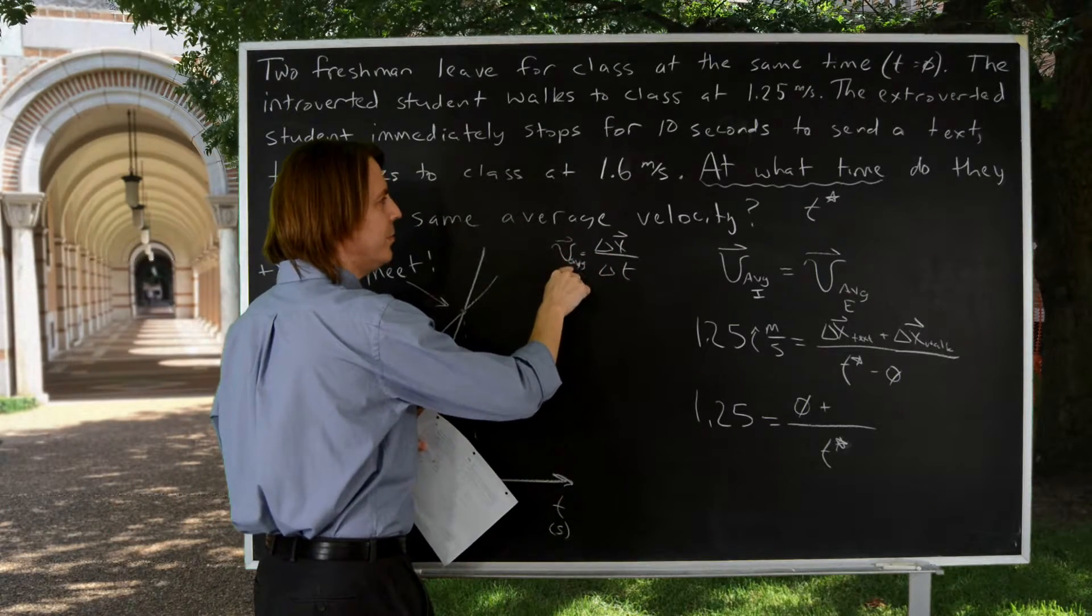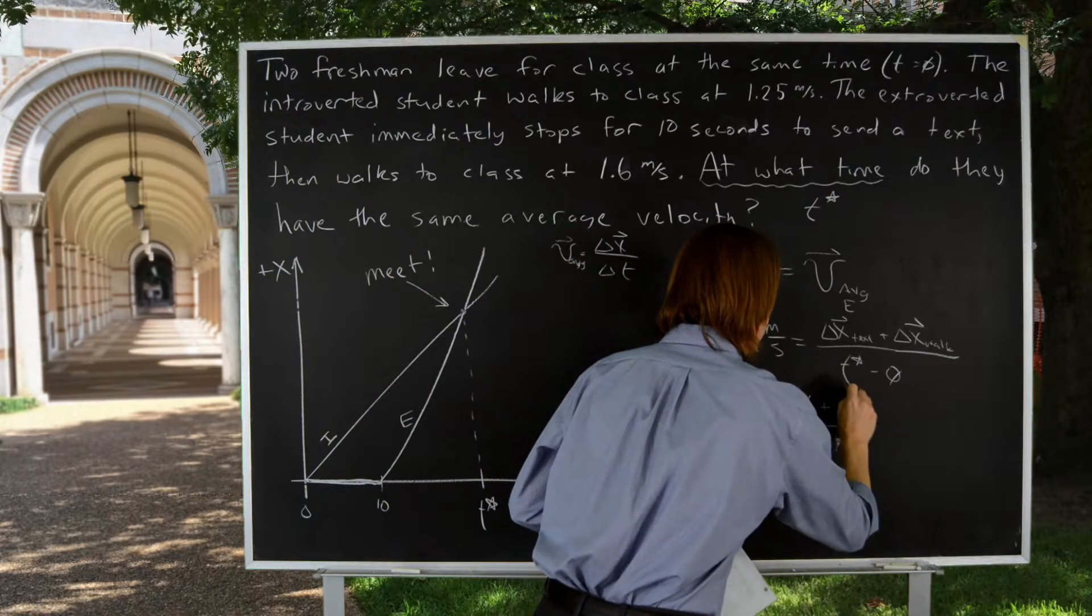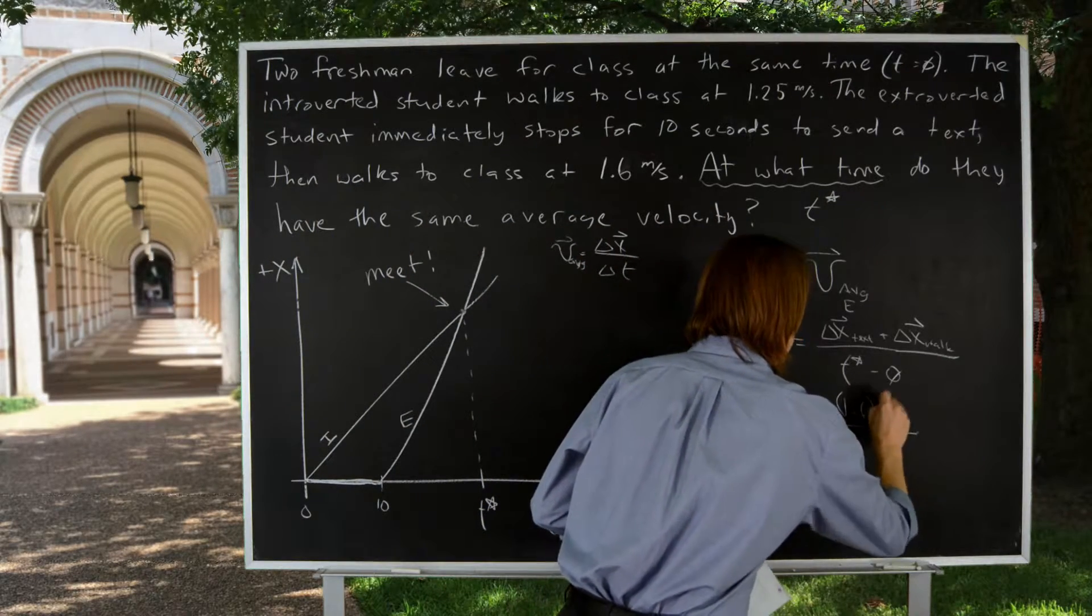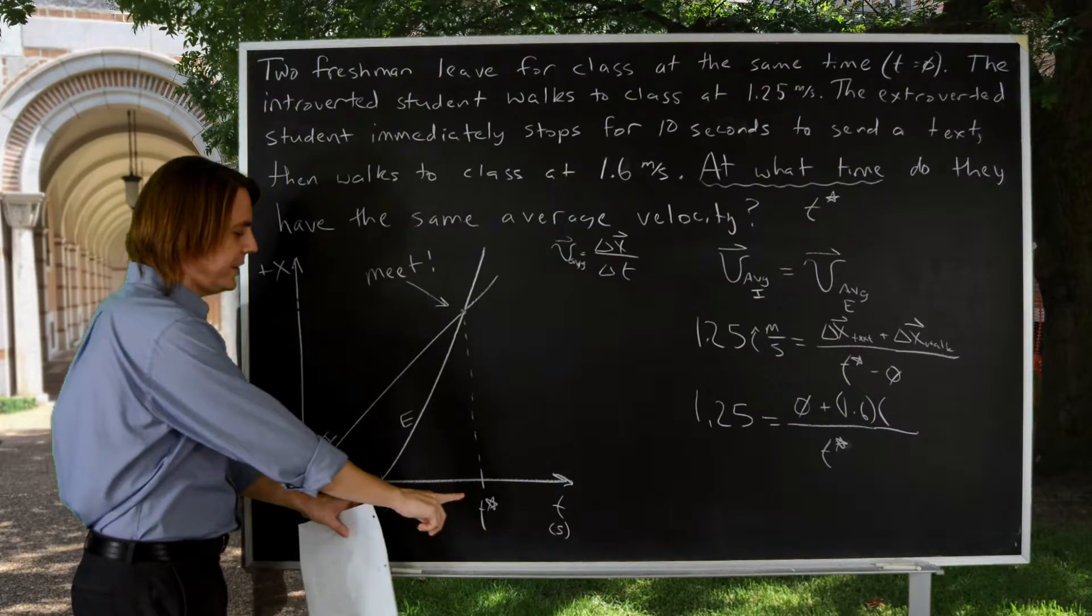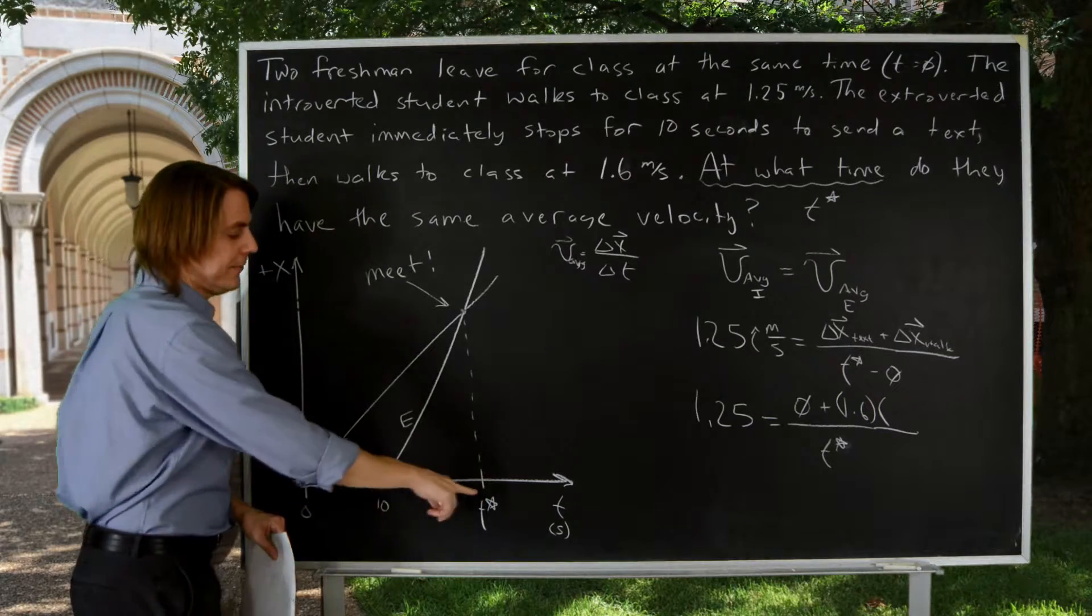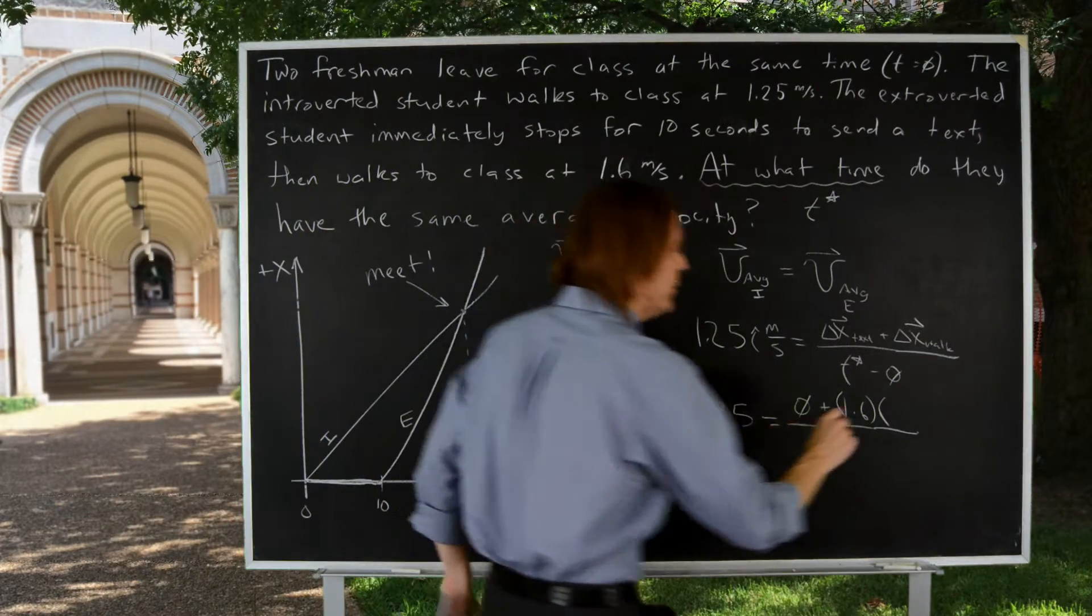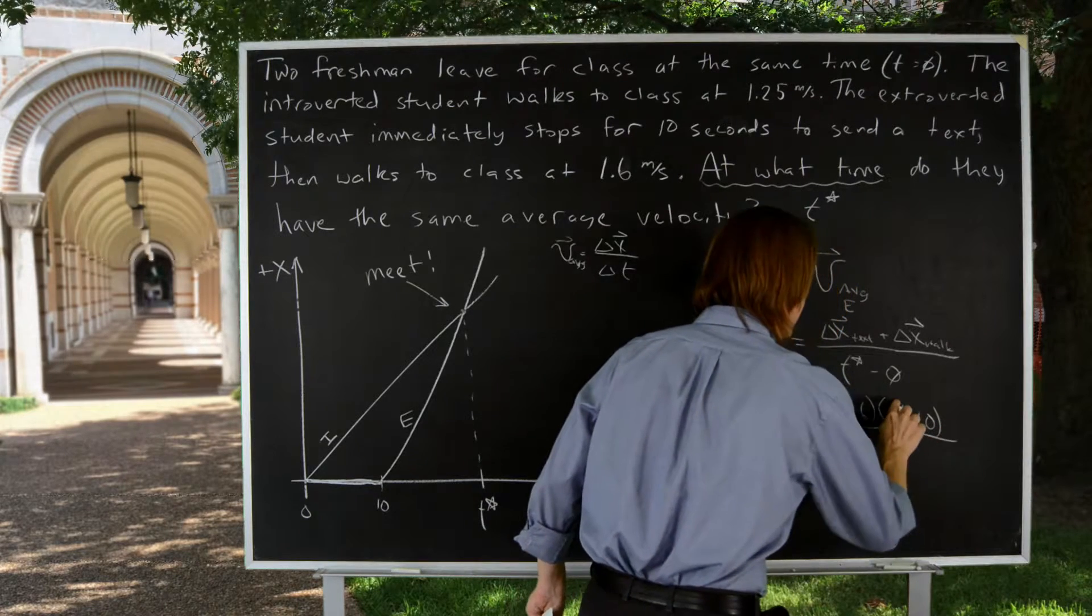So this displacement is the speed, or the velocity was 1.6 meters per second, 1.6 times the time, but the time is not just T star. They didn't go 1.6 for T star. It's T star minus 10. Final minus initial. So we'll put T star minus 10.